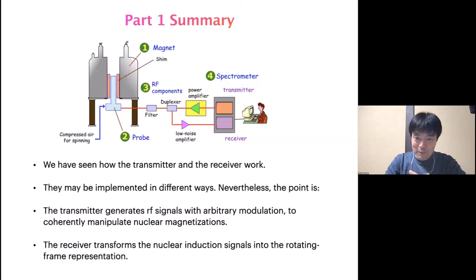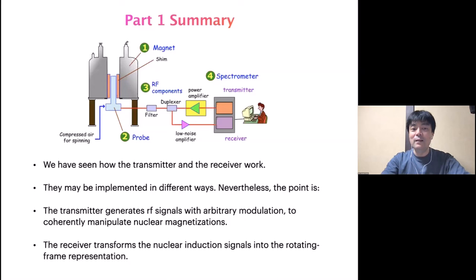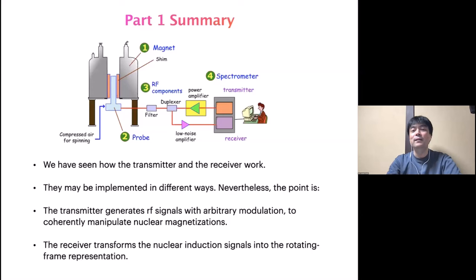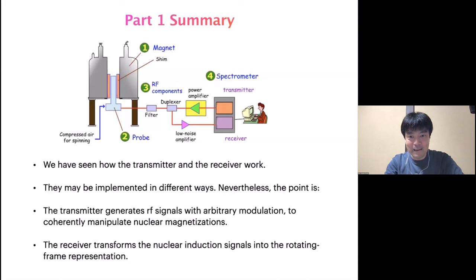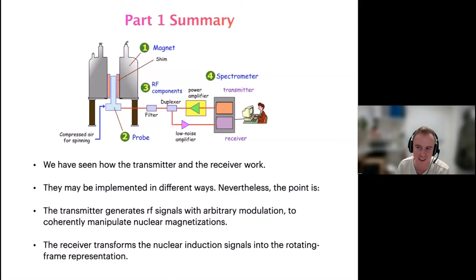Now let me summarize Part 1. We have seen how the transmitter and the receiver work, focusing on the open-core NMR spectrometer. The transmitter generates RF signals with arbitrary modulation according to what you want to do to the spin system you are dealing with. The receiver transforms the nuclear induction signal into the rotating frame representation.